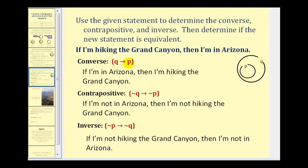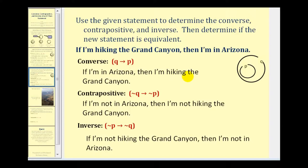So the converse, if Q then P, would be: if I'm in Arizona, then I'm hiking the Grand Canyon. So if I'm inside set Q, I'm not guaranteed to be inside P. Therefore, the converse is not equivalent to if P then Q. In this specific case, just because I'm in Arizona does not mean that I'm hiking the Grand Canyon. Therefore this would be false.